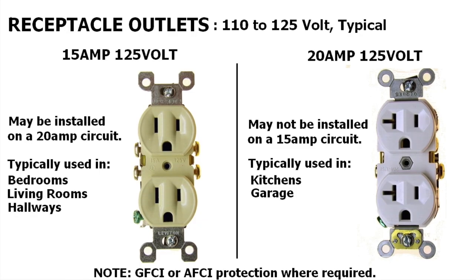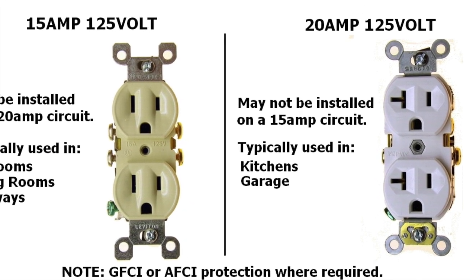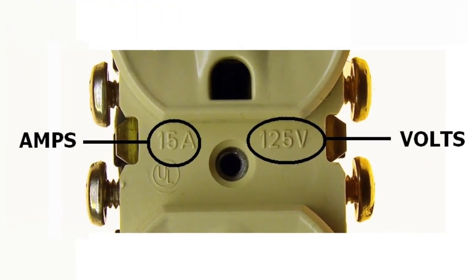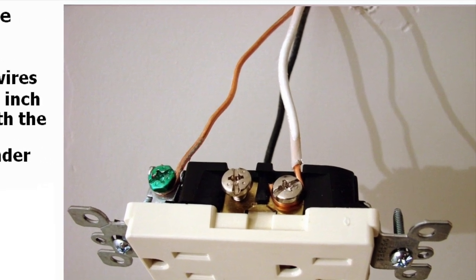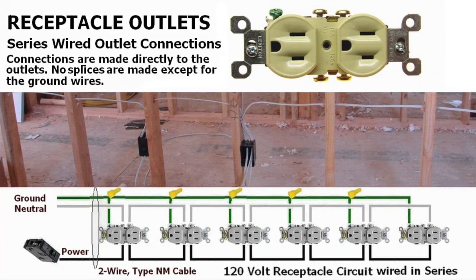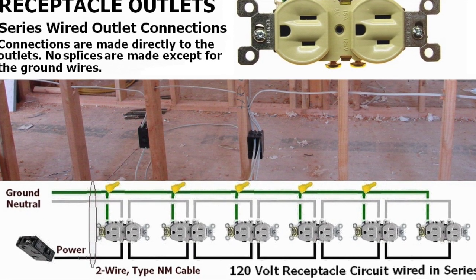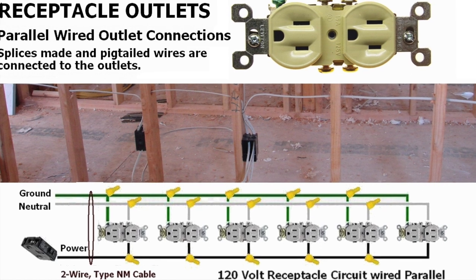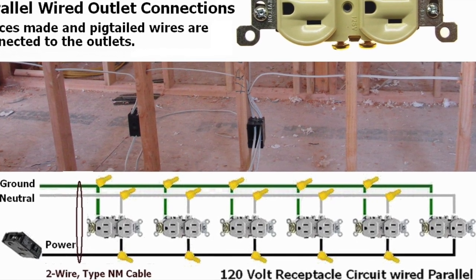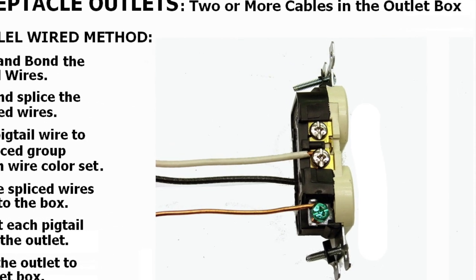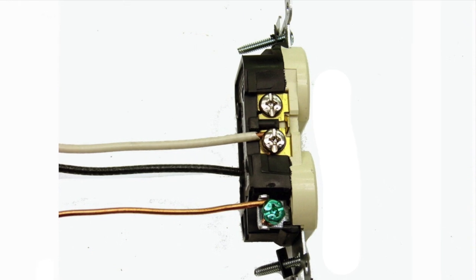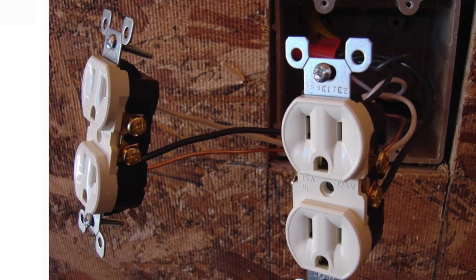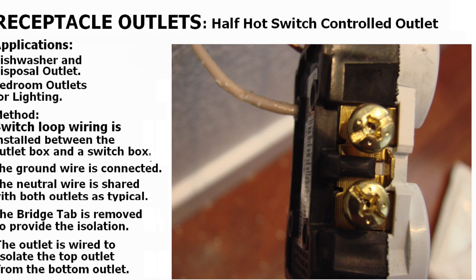Then we get specifically into receptacle outlets — how to wire 15 and 20-amp outlets: end-of-circuit connections, series wired outlets, parallel wired outlets, double wired outlets, half-hot switched outlets, and GFCI outlets. We show the difference and what it all means, including a representation of how they're installed in open-framed wiring situations, which applies to finished homes when you're replacing receptacles and want to understand how the wires are connected.